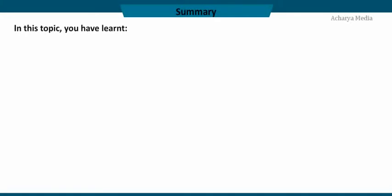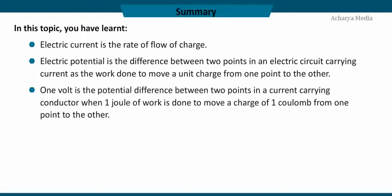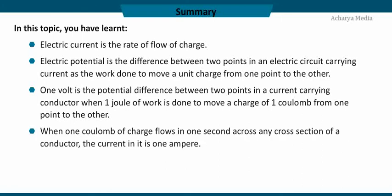In this topic you have learnt: electric current is the rate of flow of charge. Electric potential is the difference between two points in an electric circuit carrying current as the work done to move a unit charge from one point to the other. One volt is the potential difference between two points in a current carrying conductor when one joule of work is done to move a charge of one coulomb from one point to the other. When one coulomb of charge flows in one second across any cross section of a conductor, the current in it is one ampere.